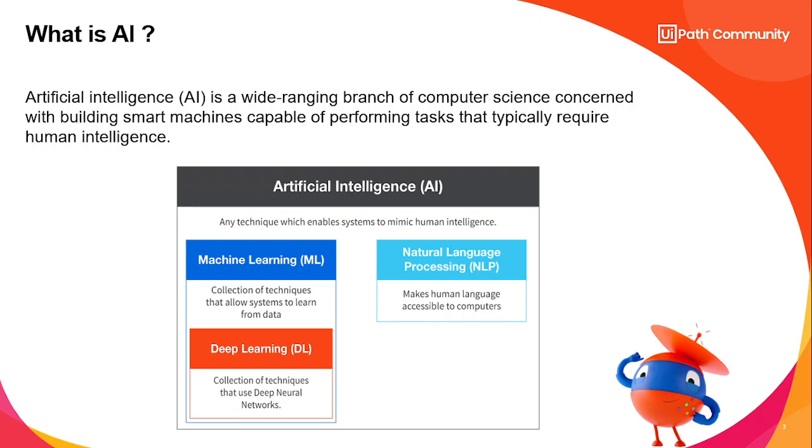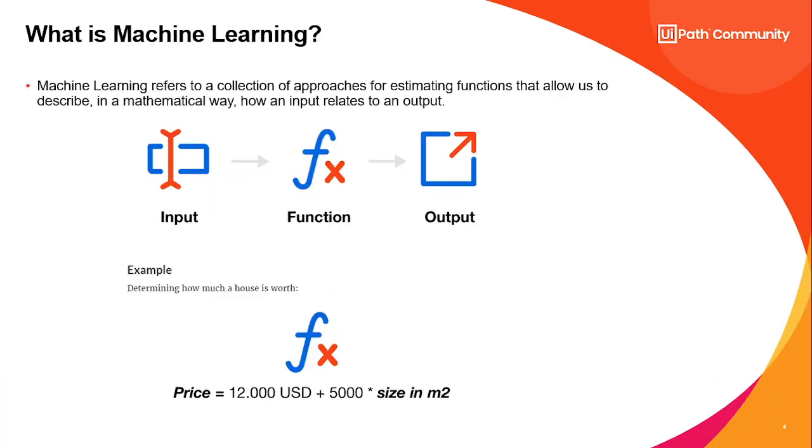Now what is machine learning? It is something that allows machines or systems to learn from a large sample of historical data and predict future information. Just like the example shown, it has an input, it performs a function based on the input, and it gives an output. That's a simple formula. For example, the price is 12,000 USD as the input, and 5,000 square feet is the size in meter square. This function is used to determine how much a house is worth. Mathematically, we can describe it as input, function, and output.